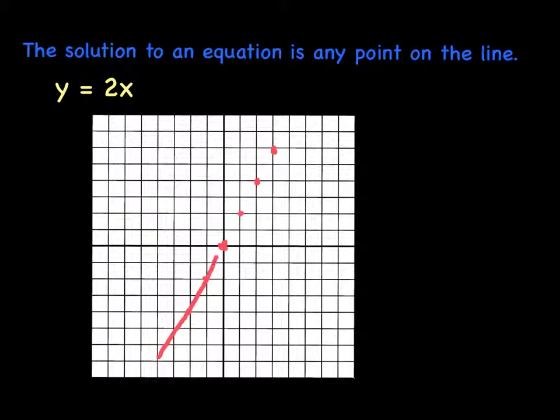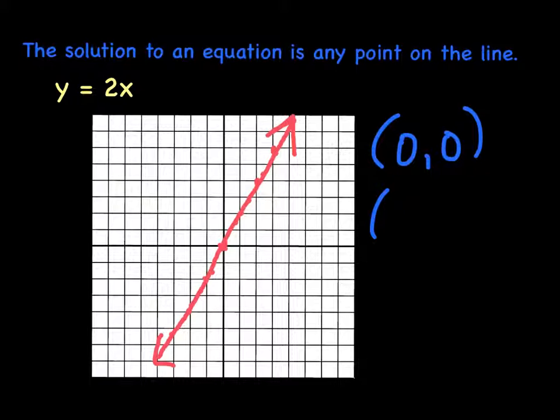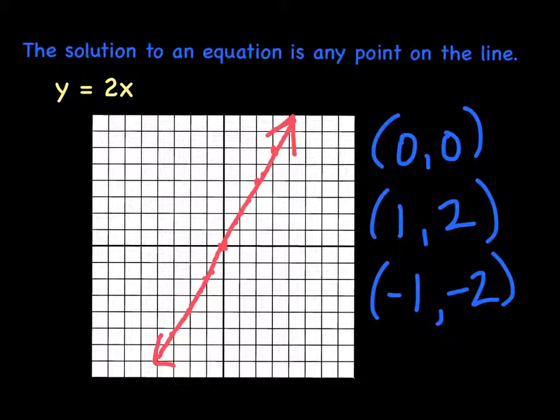Here is our line right here. So the solution would be any of these points along the line. I could say that a solution is (0, 0) because that falls on the line. I could say another solution is (1, 2). I could say another solution is (-1, -2) because that falls on the line. So any of these points that fall along the line would be considered solutions.